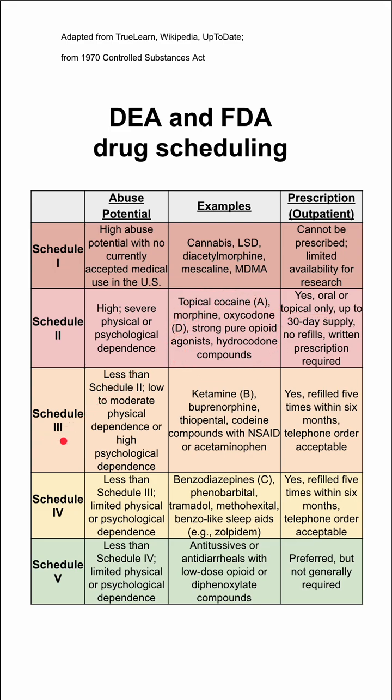Schedule 3 is less abuse potential than Schedule 2, with low to moderate physical dependence or high psychological dependence. This includes ketamine, buprenorphine, thiopental, codeine with NSAIDs, or codeine with Tylenol.